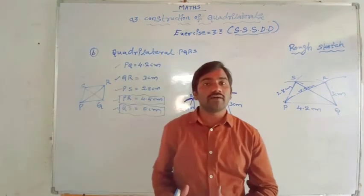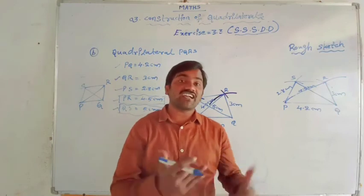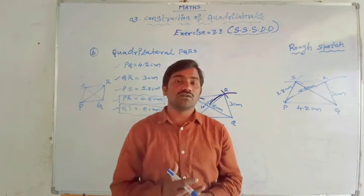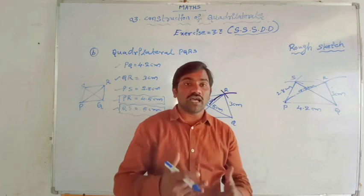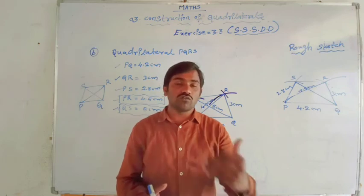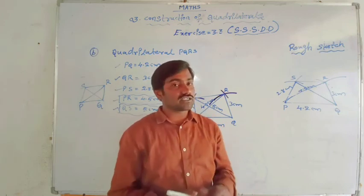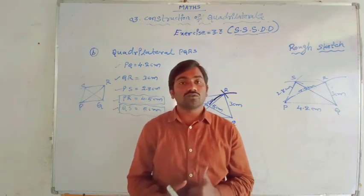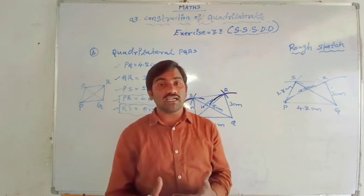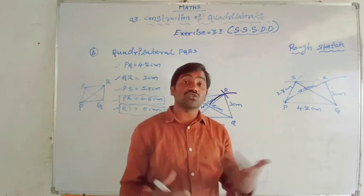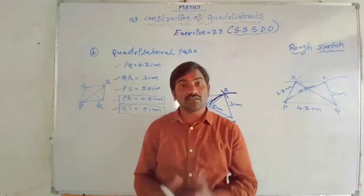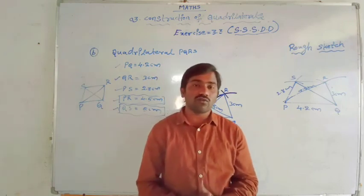How easily I have done this - in the same way, you can also do it by practicing. Practice twice and thrice to get a good quadrilateral construction. It may confuse you the first time, but by the second and third time you can do it very well. Practice makes perfect, so practice properly and construct good quadrilaterals with the given measurements. In our next video, we will learn the next kind of quadrilateral - when 3 sides and 2 angles are given, how to construct. Thank you for watching this video. Thank you all.